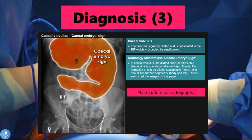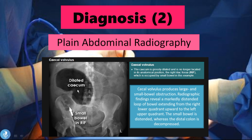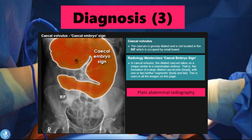A notable sign on plain abdominal radiography is the cecal embryo sign. The dilated cecum takes on a shape similar to a developing mammalian embryo, with the formation of a large dilated cecal pole — the head — with one or two further segments forming a body and tail. The cecum is grossly dilated and not located in the right iliac fossa, which is now occupied by the small bowel.